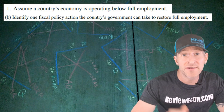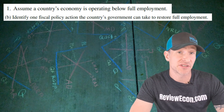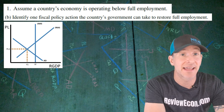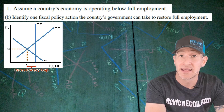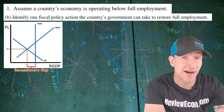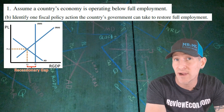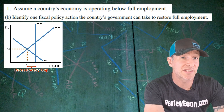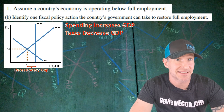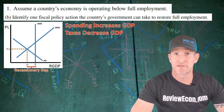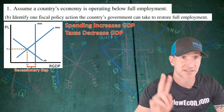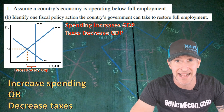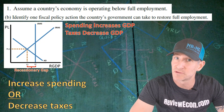For part B, we have to identify one fiscal policy action that the government could take to restore the economy to full employment. Looking back at our graph, we can see that this economy is suffering from a recessionary gap — the full employment level of output YF is greater than the current output Y1. To increase real GDP output, we have two possible answers: increase government spending or decrease taxes. Either one of those answers will get you a point.